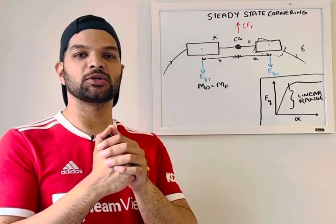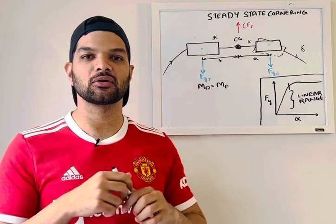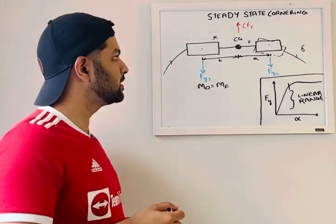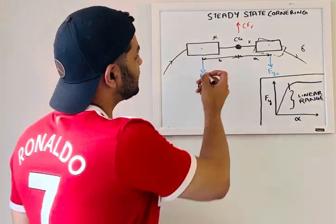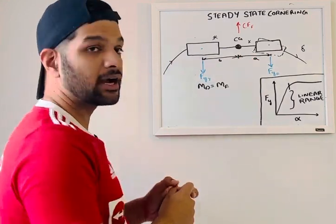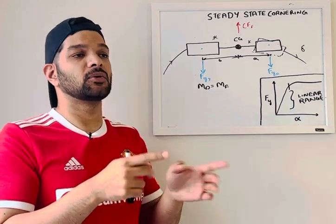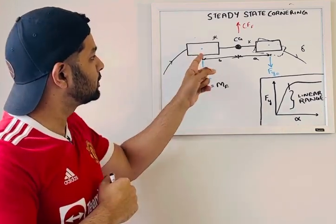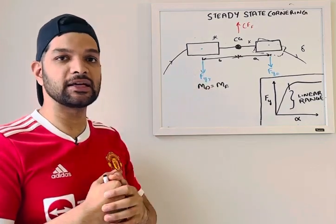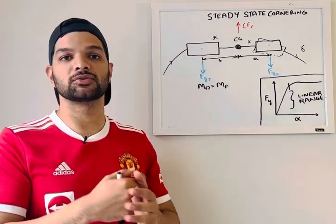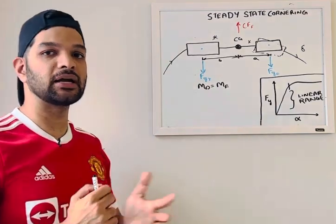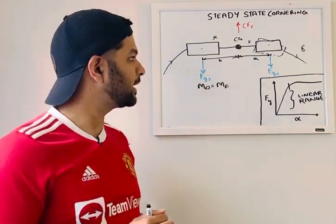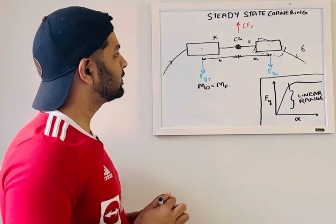Welcome back. Today we are going to be talking about steady-state cornering and the concepts of neutral steer, oversteer, and understeer. We are dealing with the bicycle model, and the assumptions are: no lateral load transfer, no longitudinal load transfer, the front and rear tires are identical in their lateral force versus slip angle characteristics, and we are operating at low speeds in the linear range where lateral force varies linearly with slip angle.